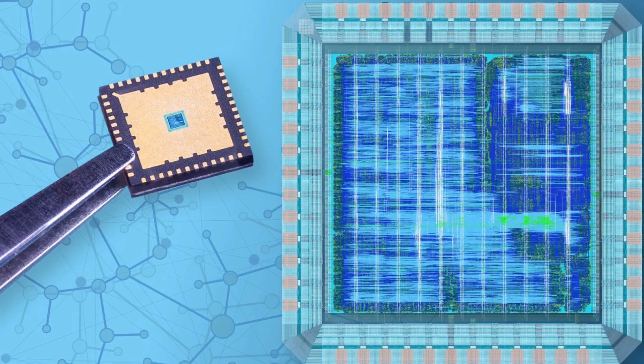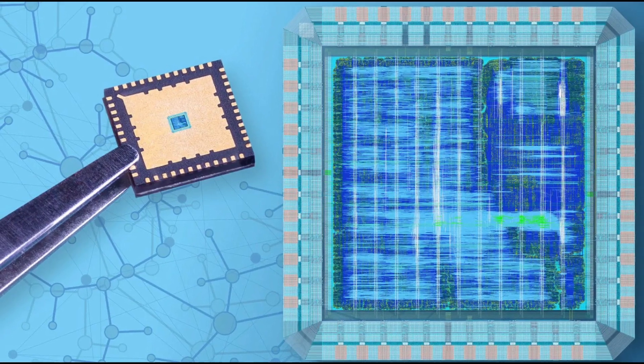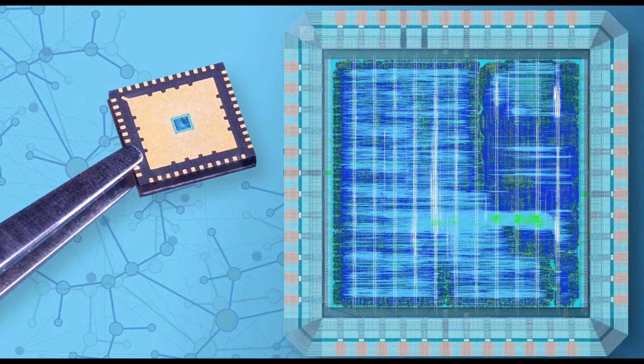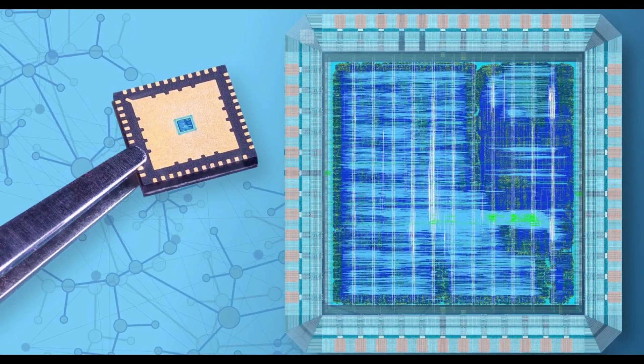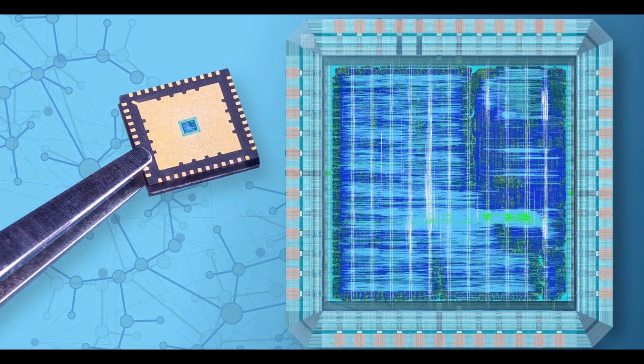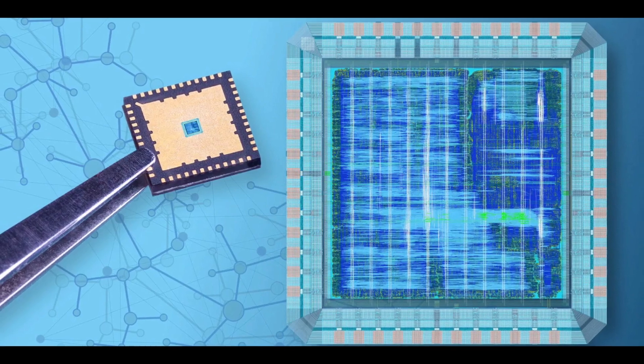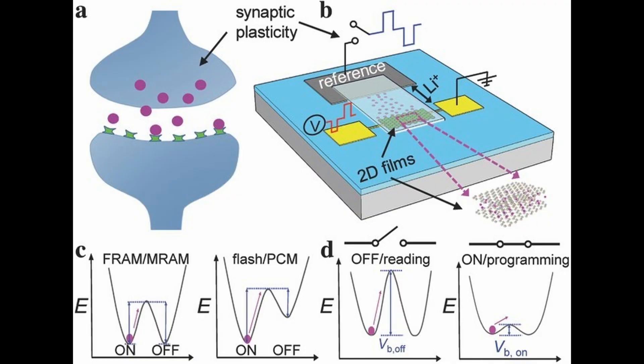In SNNs, nodes, or spiking neurons, process and store data just like biological neurons do. Artificial synaptic devices connect these spiking neurons and use analog circuitry to transfer electrical signals that mimic brain signals.